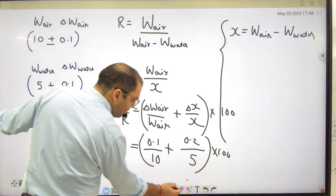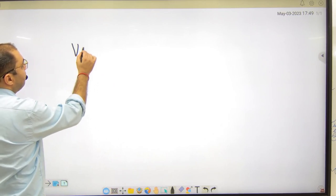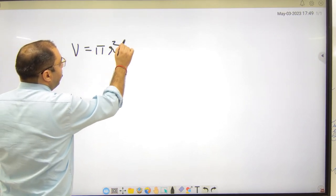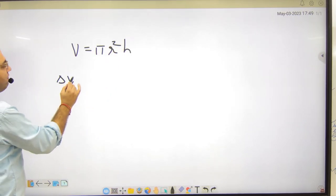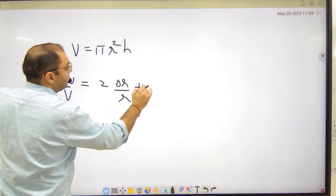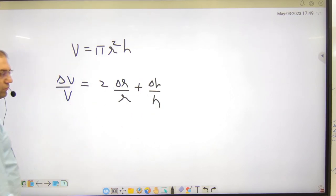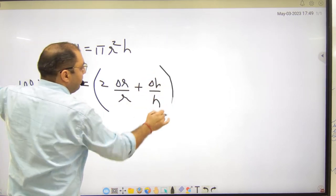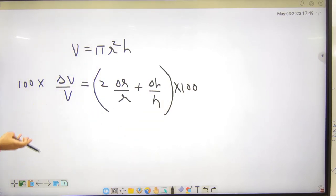Kya nikalna hai? Percentage error in volume. To volume me agar aapko percentage error nikalna hai. To volume cylinder ka hoga kya pi r square h. To delta v by v constant me koi error nai. Delta r by r plus delta h by h. Percentage nikalna ke liye hundred se dono sites ko kya kar dena hai? Multiply. Delta r pata hai, r pata hai. Delta h pata hai, h pata answer. Thik hai na ta?